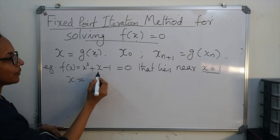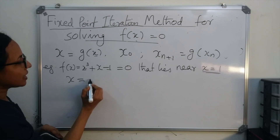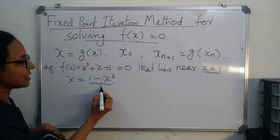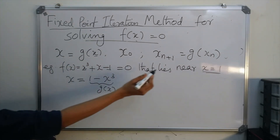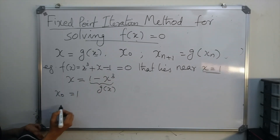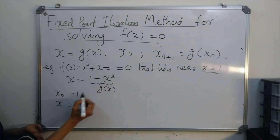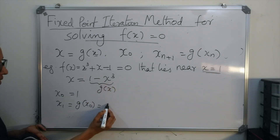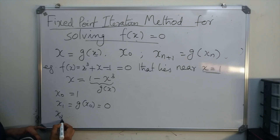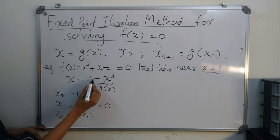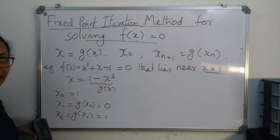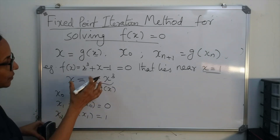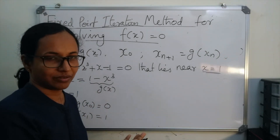One way to rearrange is to write x = 1 − x³, so g(x) = 1 − x³. With x₀ = 1, x₁ = g(x₀) = 1 − 1³ = 0. Then x₂ = g(x₁) = 1 − 0³ = 1, and x₃ = 0, and so on. It oscillates between 1 and 0 and is not converging anywhere. I will explain why this happened at the end of this lecture.